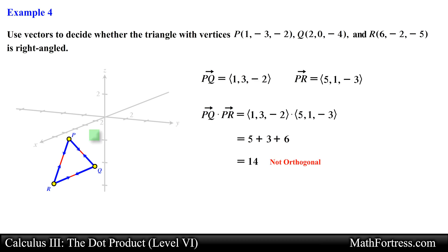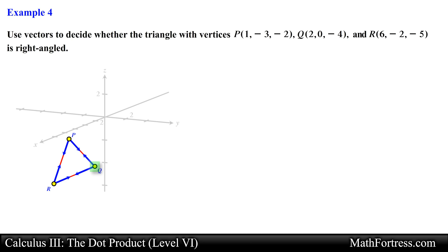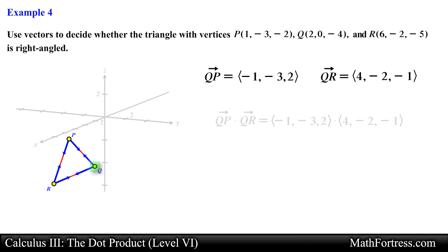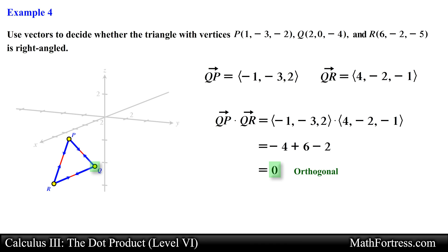Let's move on and test angle Q. This angle is formed by vector QP and vector QR. Vector QP is just the opposite of vector PQ. Finding the component form of vector QR, we then dot these vectors together and simplify, obtaining 0 as our answer. Since the dot product equals 0, these two vectors are orthogonal, which means angle Q measures 90 degrees, so this triangle has a right angle.